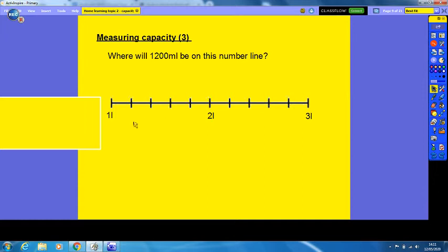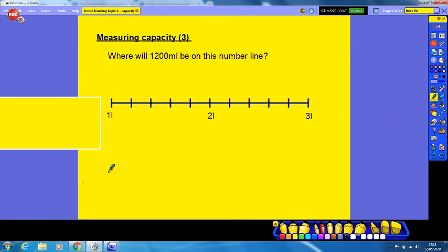I'm going to say where will 1200 milliliters be on this number line? But the problem is that our number line isn't in milliliters, so we need to make it into milliliters. We know that in one liter is a thousand milliliters, and in two liters is two thousand milliliters, and in three liters is three thousand milliliters.